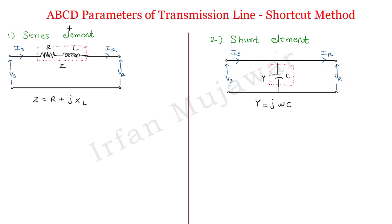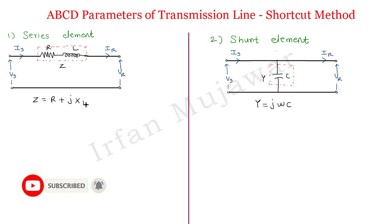To find the ABCD parameters of various lines, first we will find the ABCD parameters of a series element and a shunt element. A series element in a transmission line consists of a combination of resistance and inductance RL, forming a series impedance Z given by R plus jXL. The shunt element consists of a capacitance — in practice a parallel combination of capacitance and conductance, but shunt conductance is usually neglected, so we consider only the shunt capacitance.